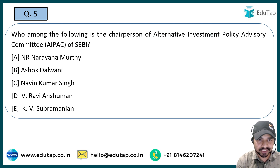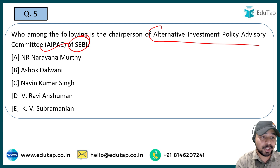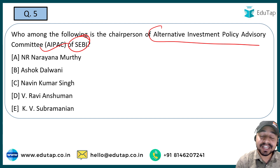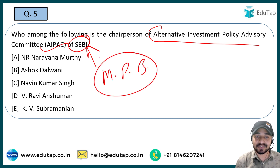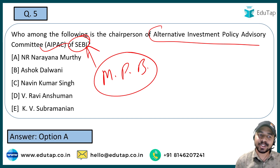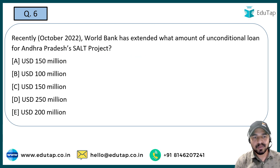The next question: who among the following is the chairperson of the Alternative Investment Policy Advisory Committee of SEBI? When any organization comes up in the news, you should also remember who its chairman is. The chairperson of SEBI is Madhabi Puri Buch, but the right answer to this question is N.R. Narayana Murthy, who is basically the chairman of the Alternative Investment Policy Advisory Committee of SEBI.